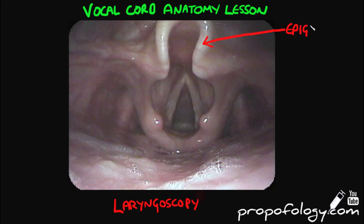The arrow I'm drawing now is in the anterior portion of the view and represents the epiglottis. The epiglottis is a cartilaginous structure that, as you swallow, will fall down over the entrance to the trachea and allow food to slide over it and into the posterior esophagus.